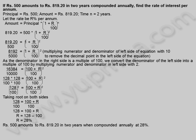500 rupees amounts to 819.20 rupees in 2 years when compounded annually at 28 percentage. Let us see another example.